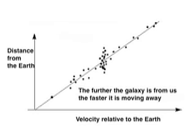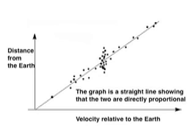You can see that the further the galaxy is away, the faster it is moving away from us, and that relationship is proportional, because the graph is a straight line.